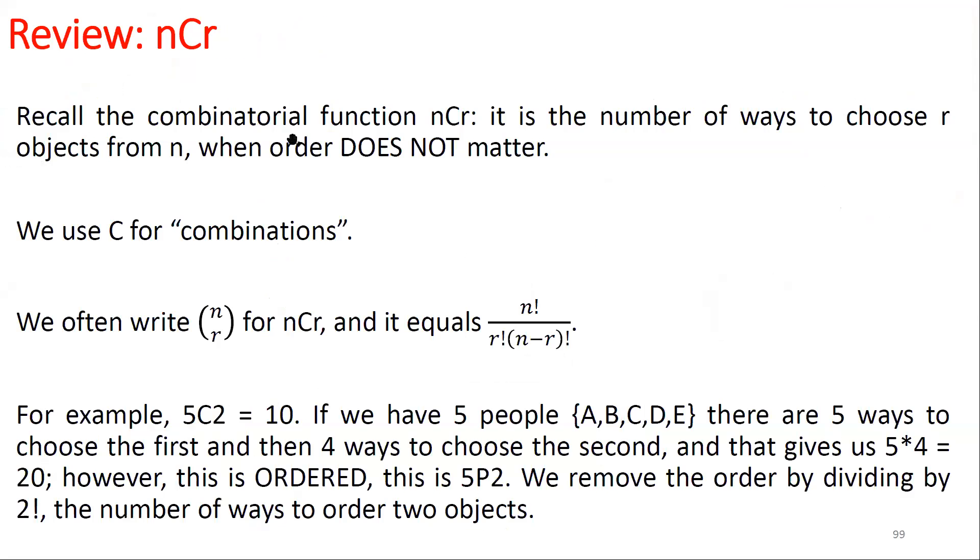Just as a quick review, the function nCr, which we've been using a lot, is the combinatorial function. It's the number of ways of choosing r objects from n when order does not matter. We use the letter C to denote combinations. We often write nCr with parentheses, with n above r, and it equals n factorial divided by r factorial times (n-r) factorial.